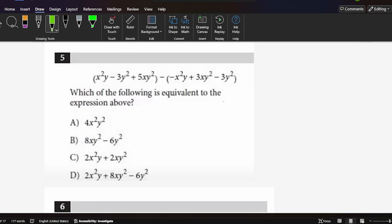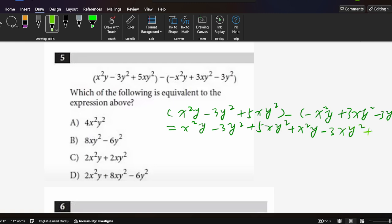So just easier, open it. Open it. x²y - 3y² + 5xy² minus, minus negative x²y + 3xy² - 3y². Then open the brace. This is negative, so change the negative to positive: plus x²y - 3xy² + 3y².